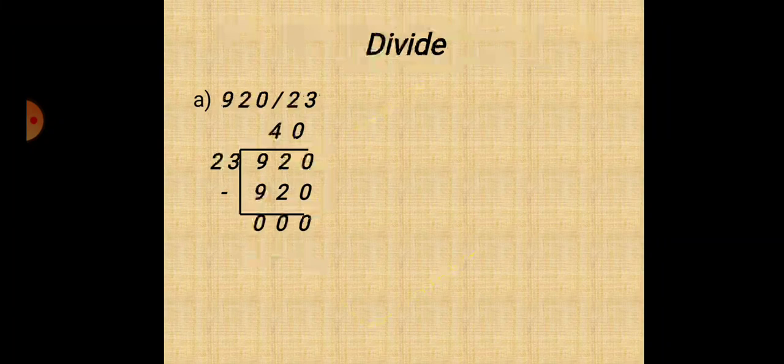Question 2: Divide. A: 920 divided by 23. 23 times 40 are 920. 920 minus 920, we will get 0.